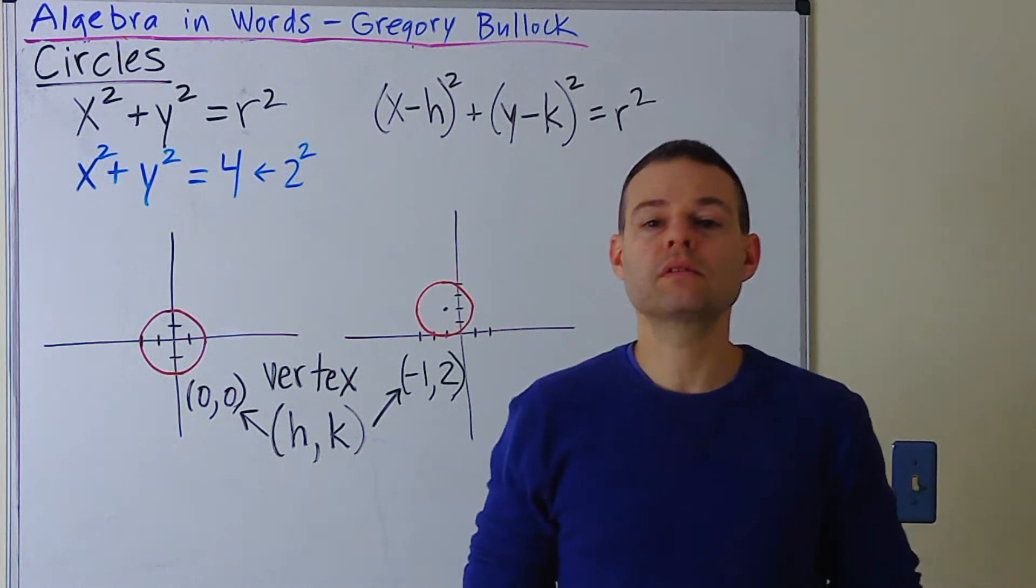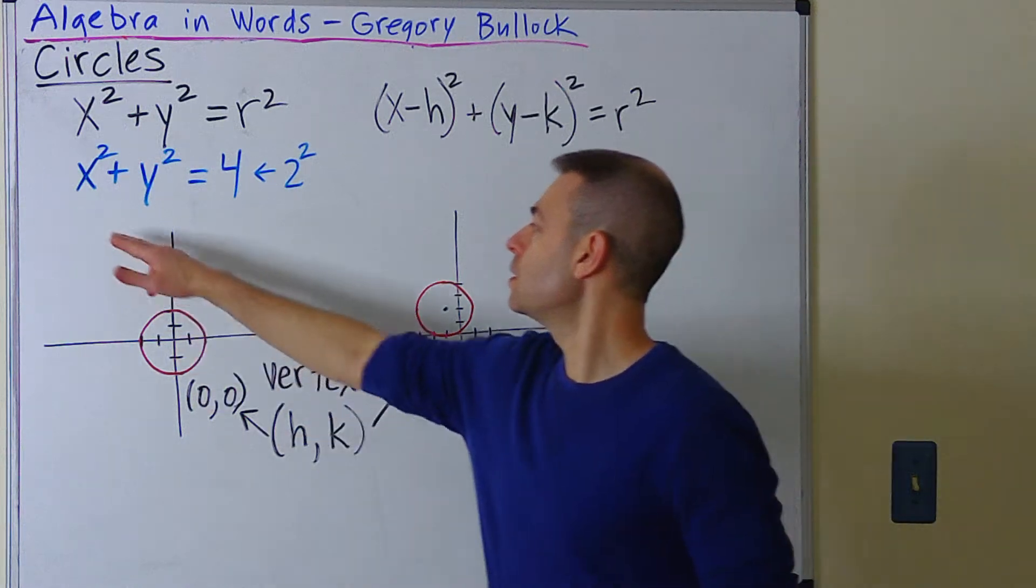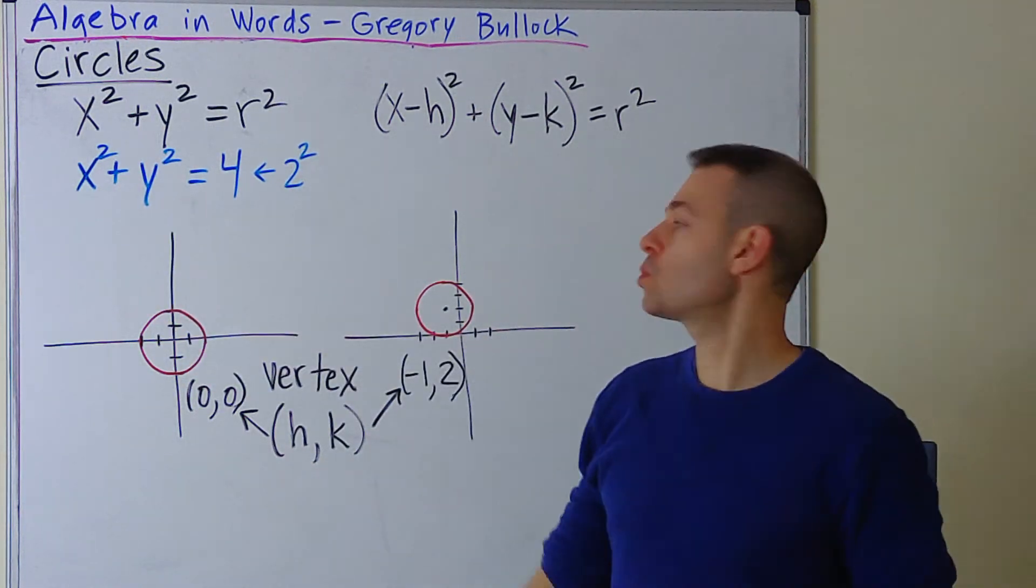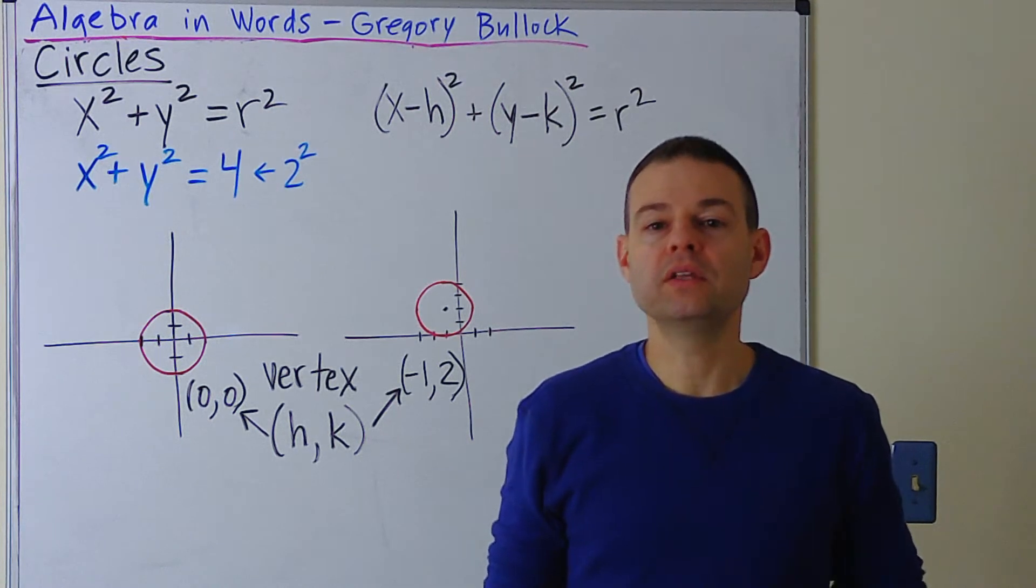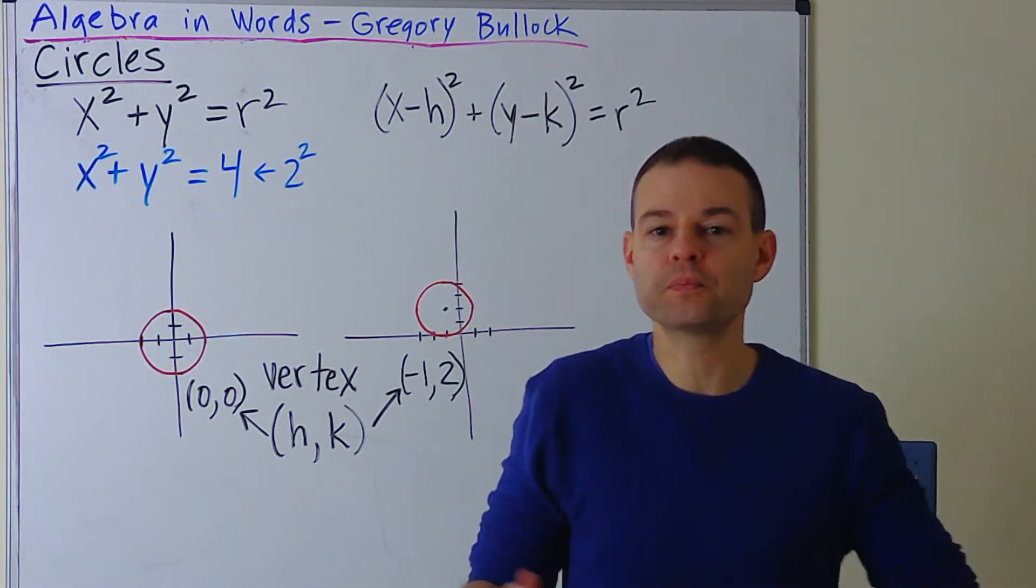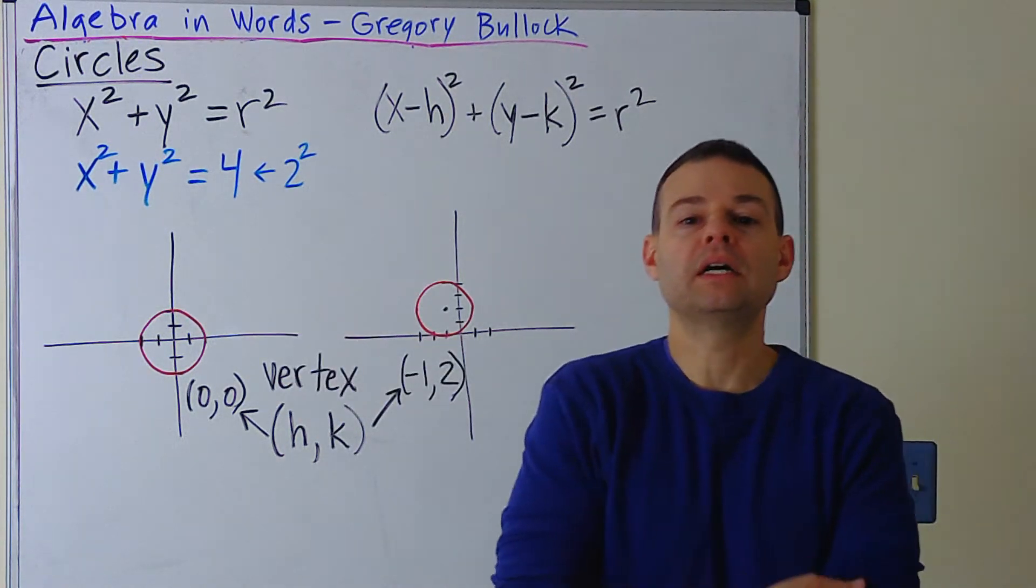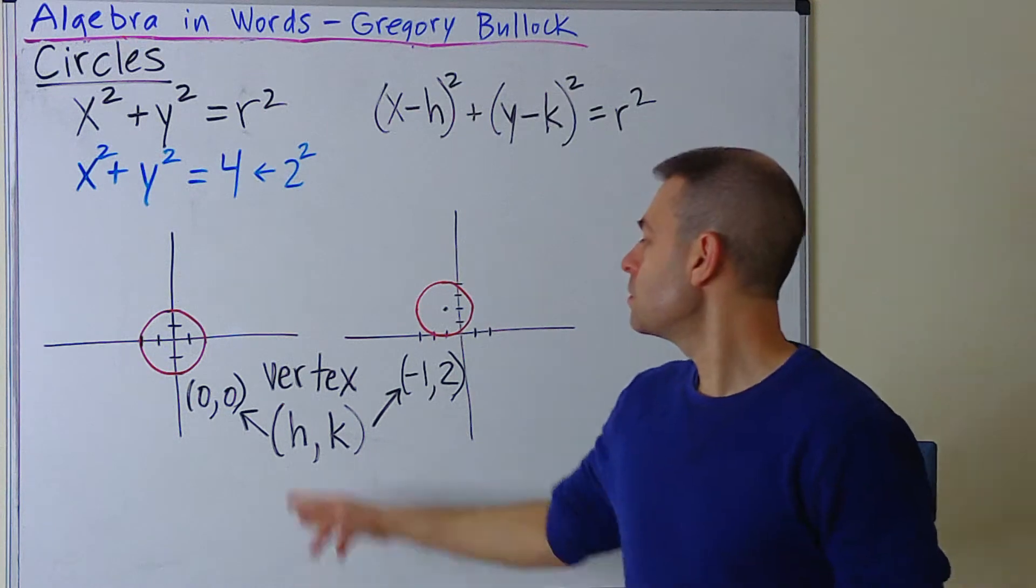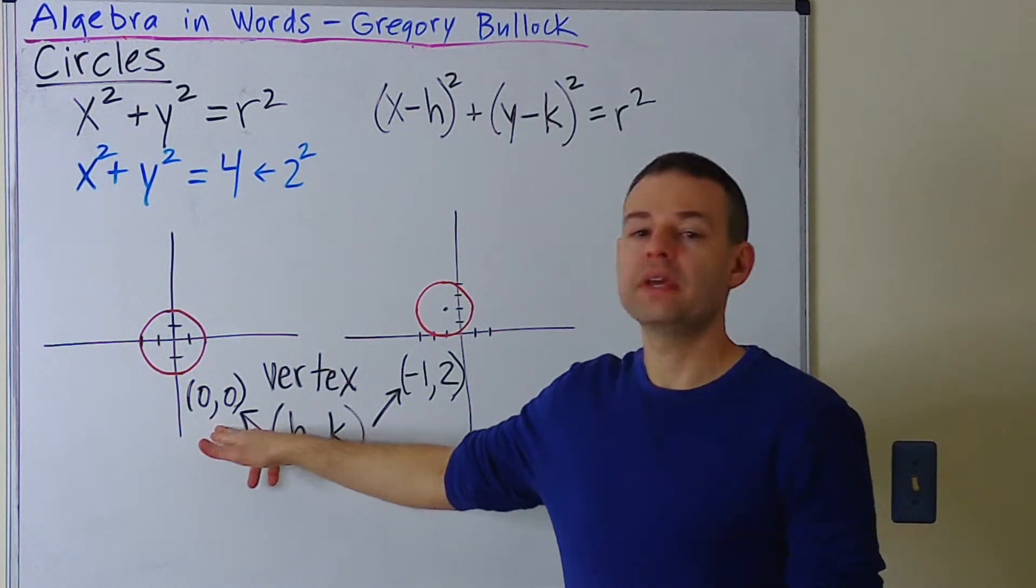Now, what I did is I put up one equation with an actual radius: x² + y² = 4. And in this case, 4 is r². You can think of that as 2², where the radius is 2. So I have that graphed here. Now, in this case, the vertex, which I have here, is (0,0).